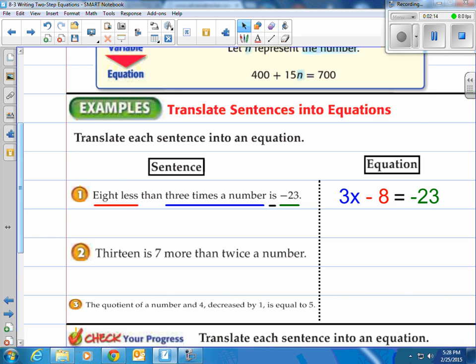How about number 2? Thirteen is seven more than twice a number. Seven more than twice a number would be adding seven on. So we have 13 equals 7 more than twice a number, which is 2x plus 7. Now because it's addition you can switch the seven and the 2x, but looking at what they've said, it's 13 equals 2x plus 7.